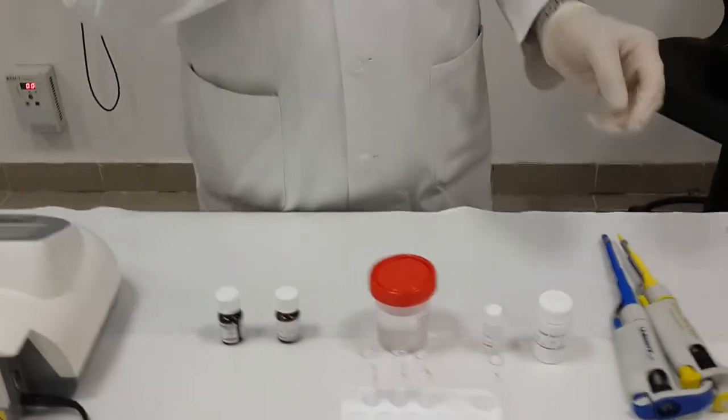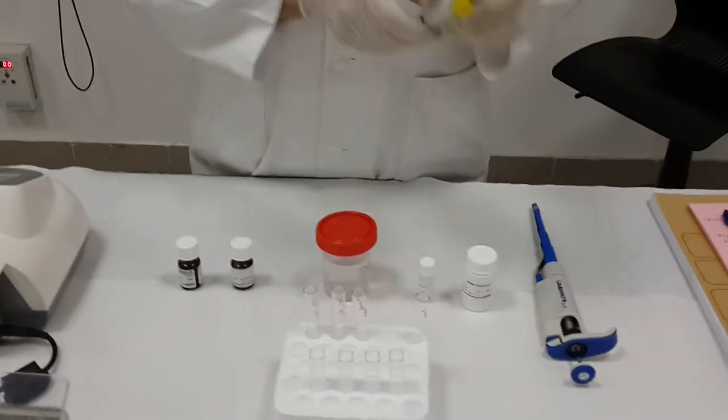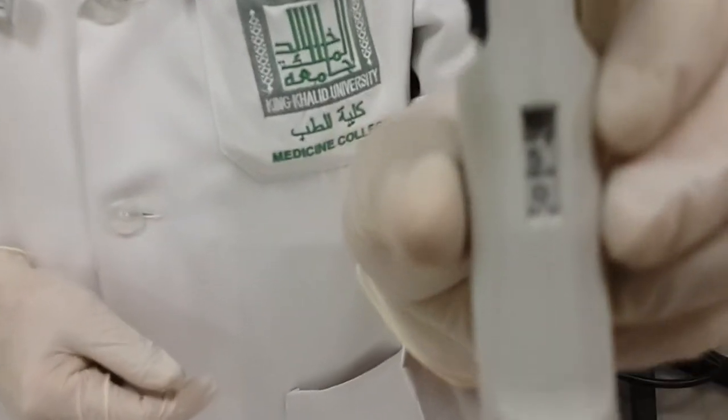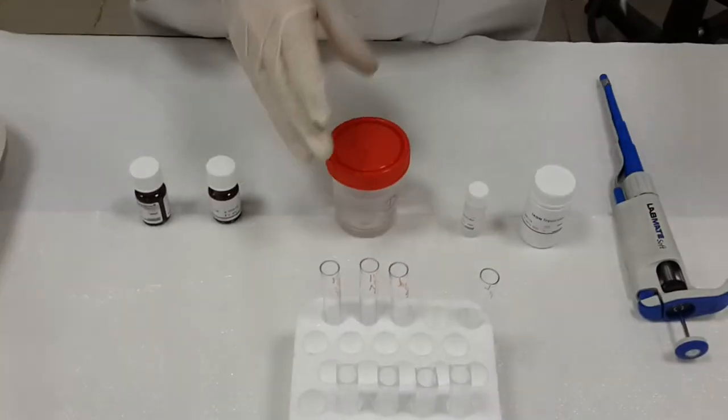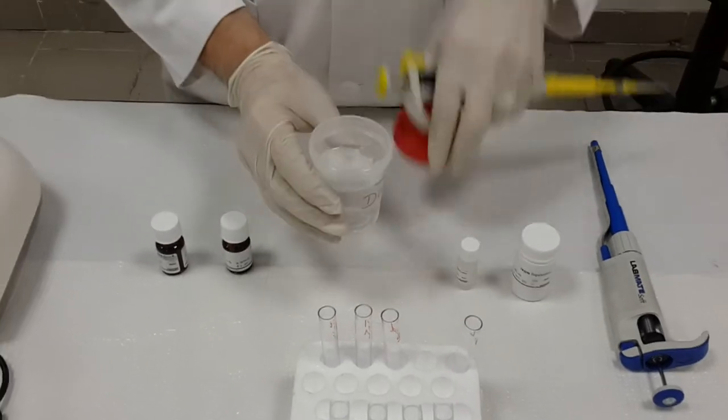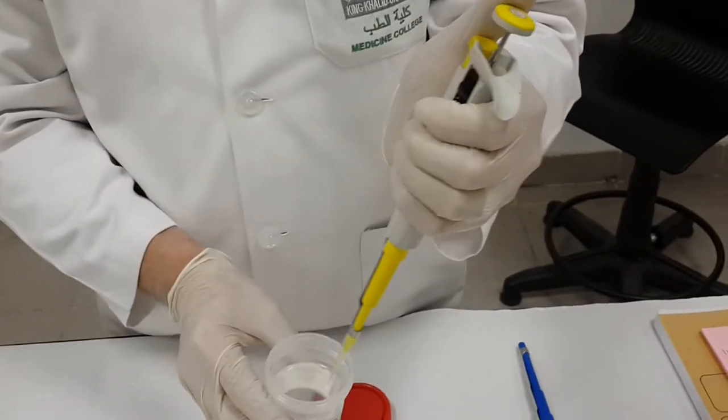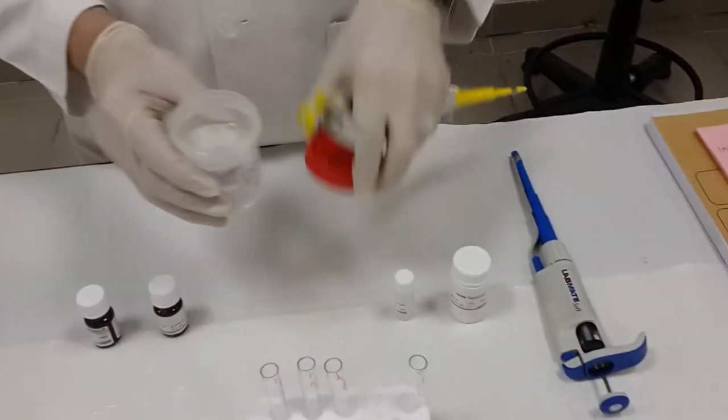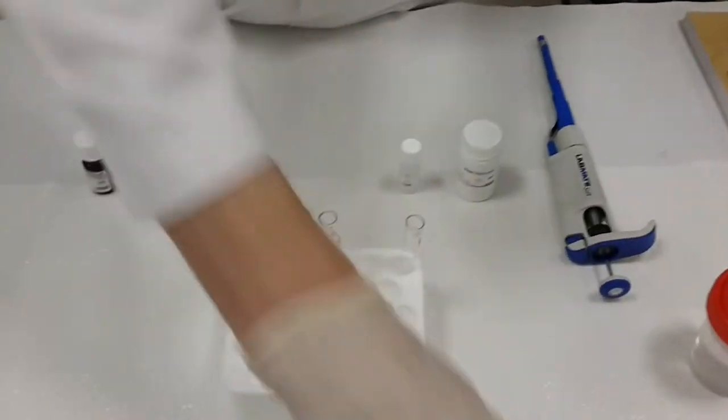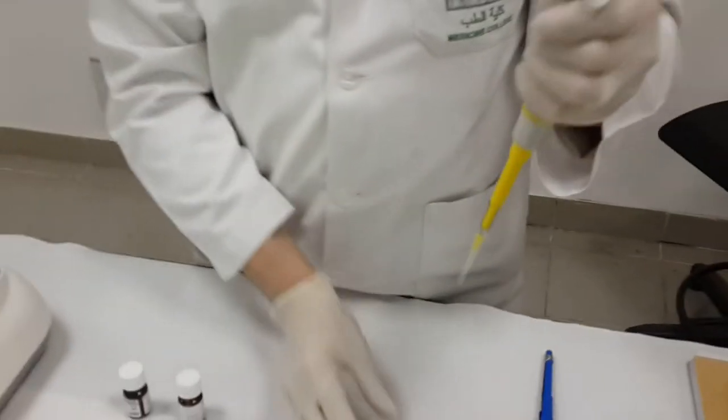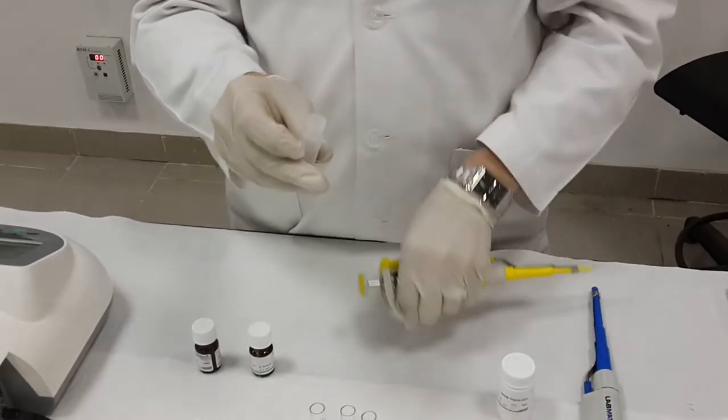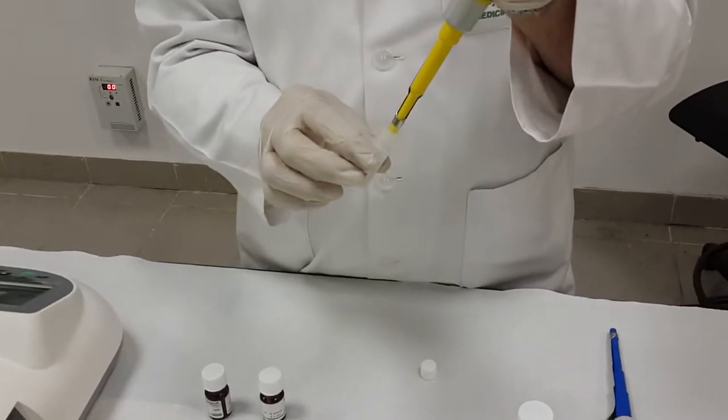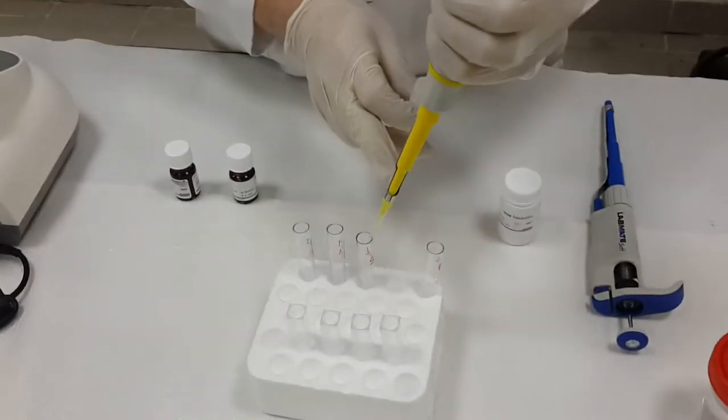Then I will take now from each one of these samples around 50 microliters. So I will use the yellow tip. As we said earlier, you have to fix it very well. Then for the blank, I will take 50 microliters of distilled water and put it in the tube of the blank. Then I have to discard the tip in the biohazard basket. For the standard, 50 microliters, I put it in the tube of the standard.